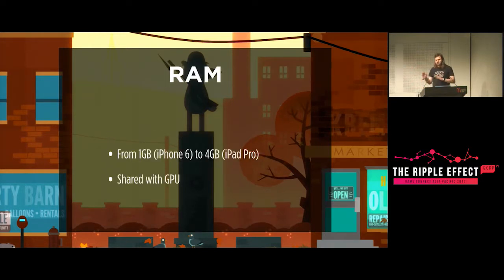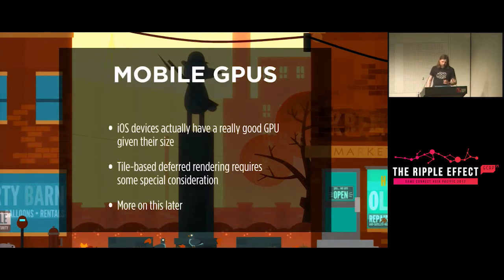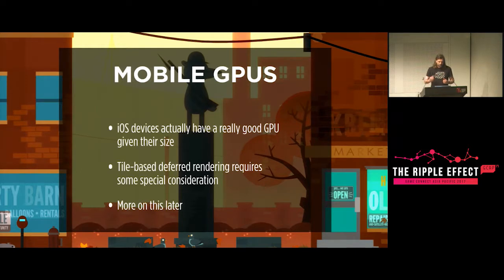RAM has actually gotten fairly good in recent devices, but these are mobile phones so we have a variable range. On the iPhone 6 and some older devices it can be as low as one gigabyte; on the iPad Pro it's four gigabytes. This memory is always shared with the GPU. iOS devices have a really good GPU inside them — especially Apple's most recent chip, the A11 GPU, which is really quite powerful. However, because they have a tile-based deferred rendering architecture, this changes the way that you lay out your scenes and perform your rendering.